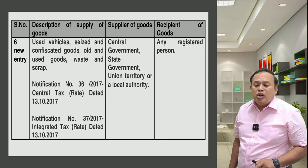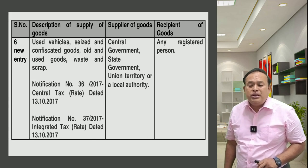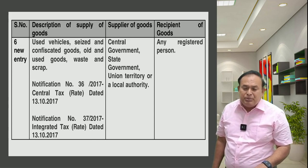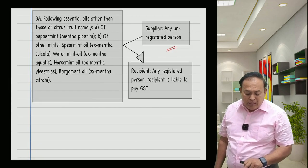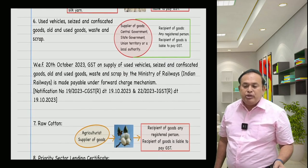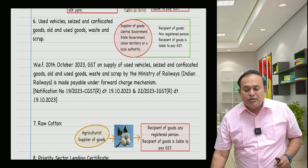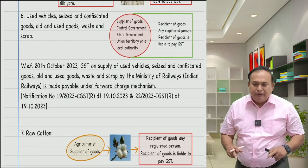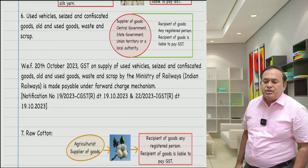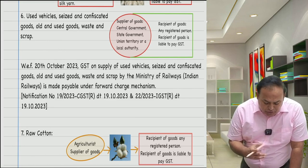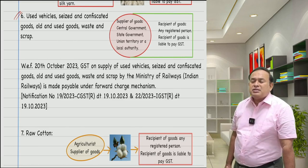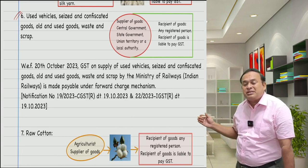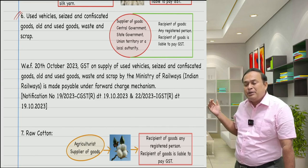Used vehicles, seized and confiscated goods, old and used goods, waste and scrap — supplied by the Central Government, State Government, Union Territory, or local authority to a registered person: in that case, the recipient only is liable to pay GST. I will give you an example: the GST department squad confiscated a goods carrier vehicle used for unlawful activities. The owner absconded. Confiscation means ownership shifts to the department from the owner. Now the owner of the confiscated vehicle is the GST department — the government. The government comes forward to sell that confiscated goods carrier vehicle and calls for bids.